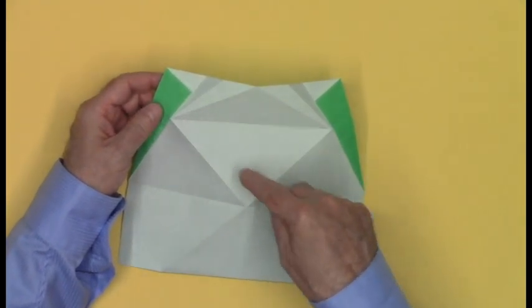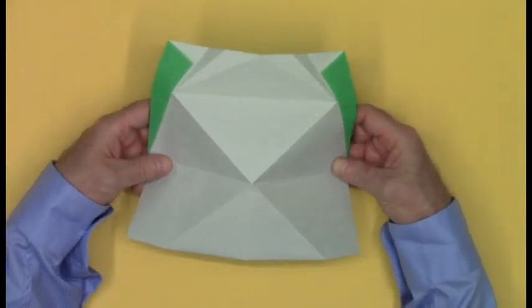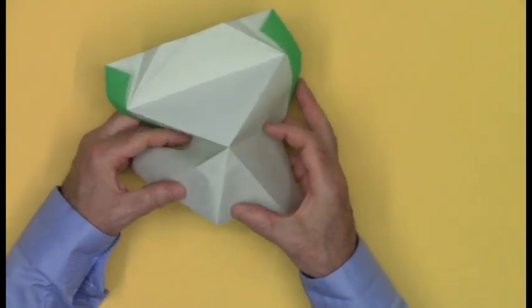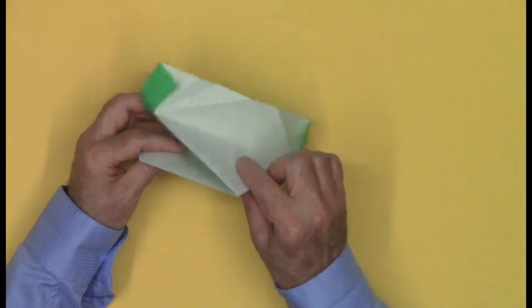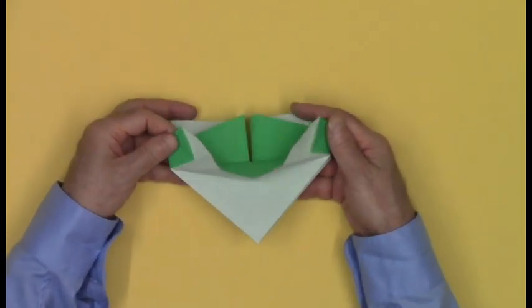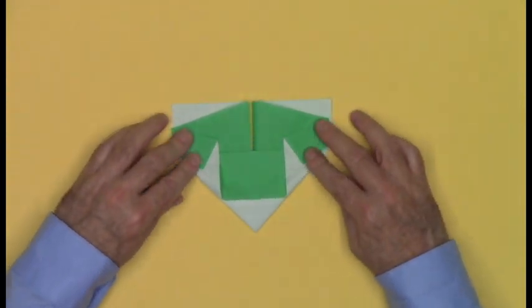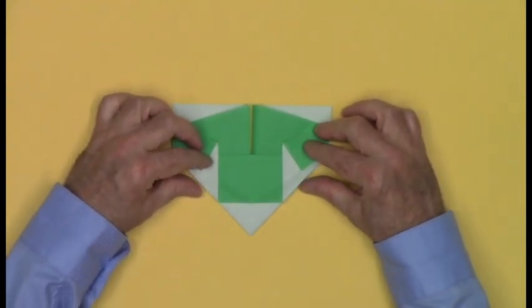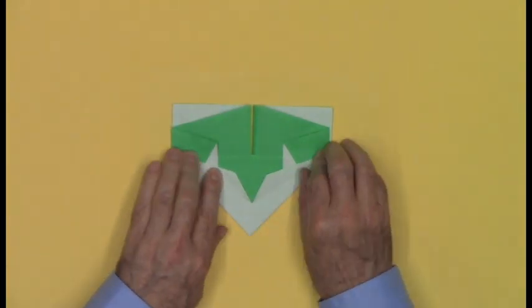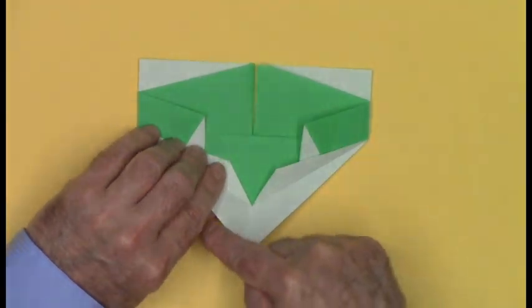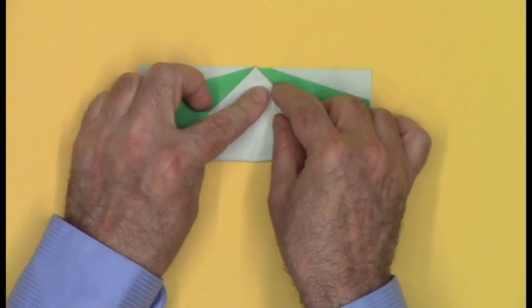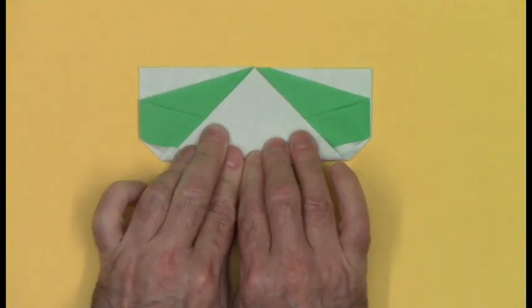So for instance, we can make this water bomb base happen, and then you remember about this, and then these little flaps come back up. Take the bottom square corner and fold it to touch the middle of the top edge, right at the top of the split.